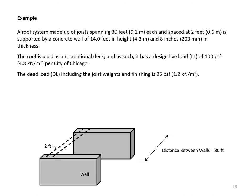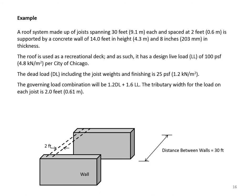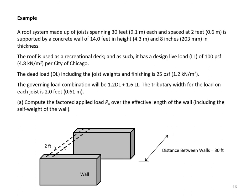The roof is used as a recreational deck with a design live load of 100 PSF per City of Chicago requirements. The dead load, including joist face and finishing, is 25 pounds per square foot. The governing load combination is 1.2D + 1.6L. The tributary width for the load on each joist is 2 feet. We want to compute the factored applied load PU over the effective length of the wall, including self-weight, and decide whether the wall design is acceptable.